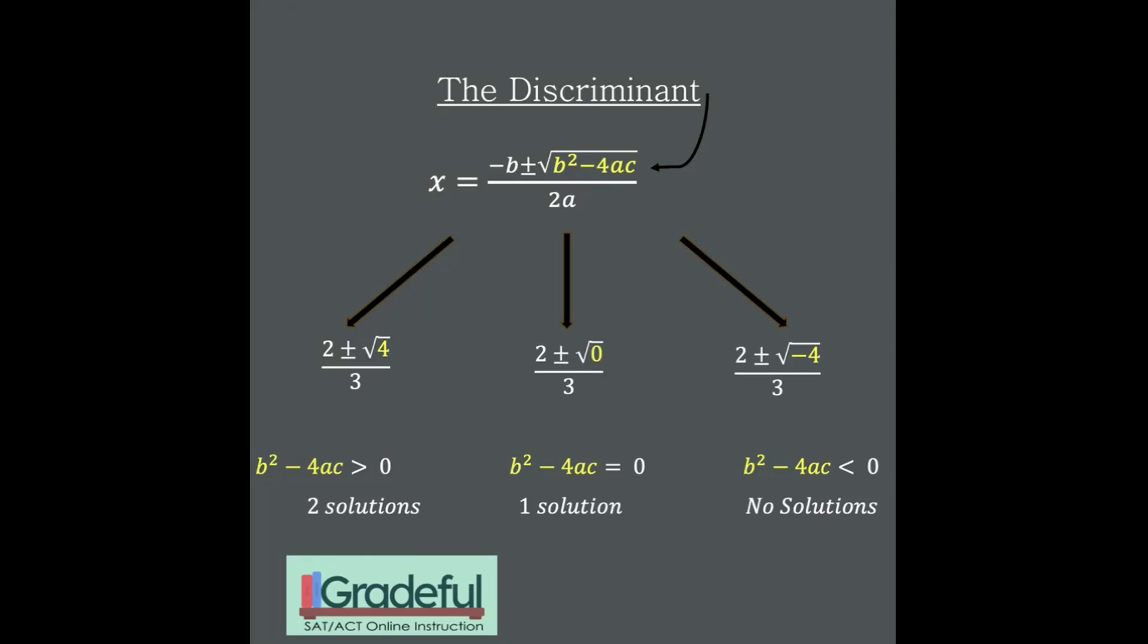So the value of the discriminant, that's the part that's under the radical here. It determines how many answers you're going to have. If the B squared minus 4AC part of a quadratic situation is a positive number, you're going to get two solutions because we would have 2 plus 2 over 3 and 2 minus 2 over 3. We'd get two solutions. If the discriminant, the part under the radical is zero, you'll have one solution because the answer would just be 2 over 3 and there'd be nothing to add or subtract. And if the part under the radical, the discriminant is negative, you'll have no solutions because you're not allowed to have a negative under a radical.